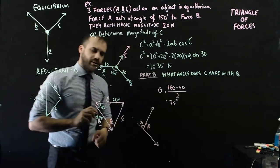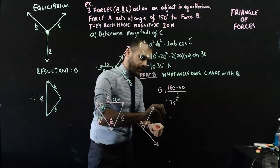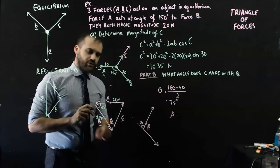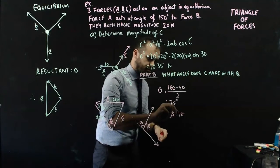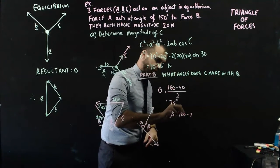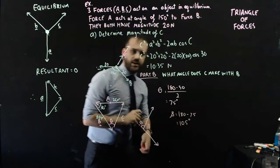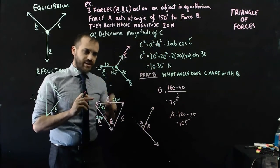Obviously, angle beta is equal to, that's a straight line, 180 minus theta, which is 75. We get 105 degrees. That is the angle that C makes with B.